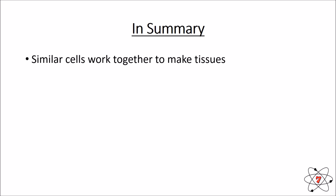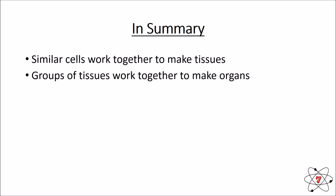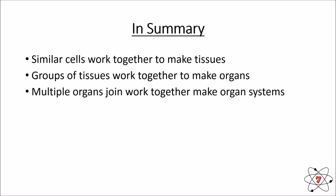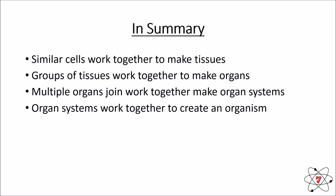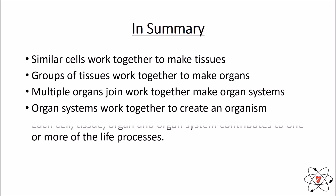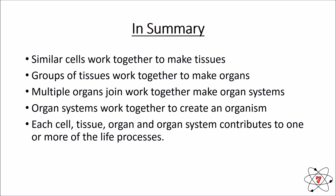In summary: lots of similar cells work together to make tissues; lots of groups of tissues work together to make organs; multiple organs work together to make organ systems; and all organ systems work together to make our organism. Every cell, tissue, organ, and organ system contributes to one or more of the life processes — remember MRS GREN: Movement, Respiration, Sensitivity, Growth, Reproduction, Excretion, and Nutrition.